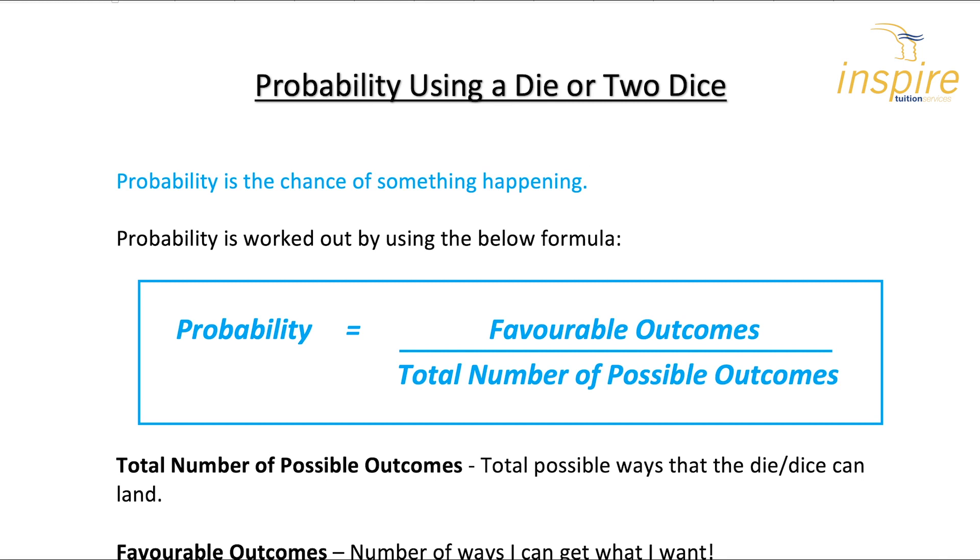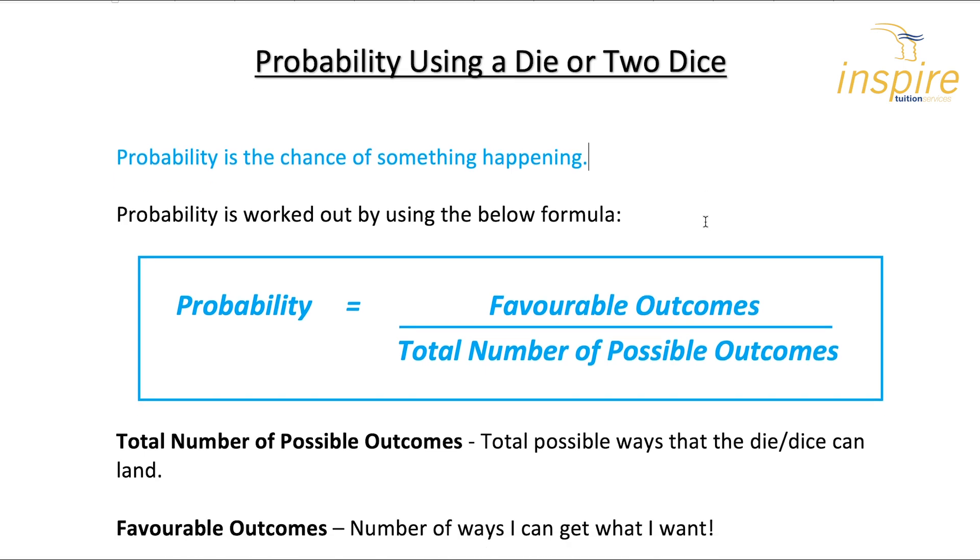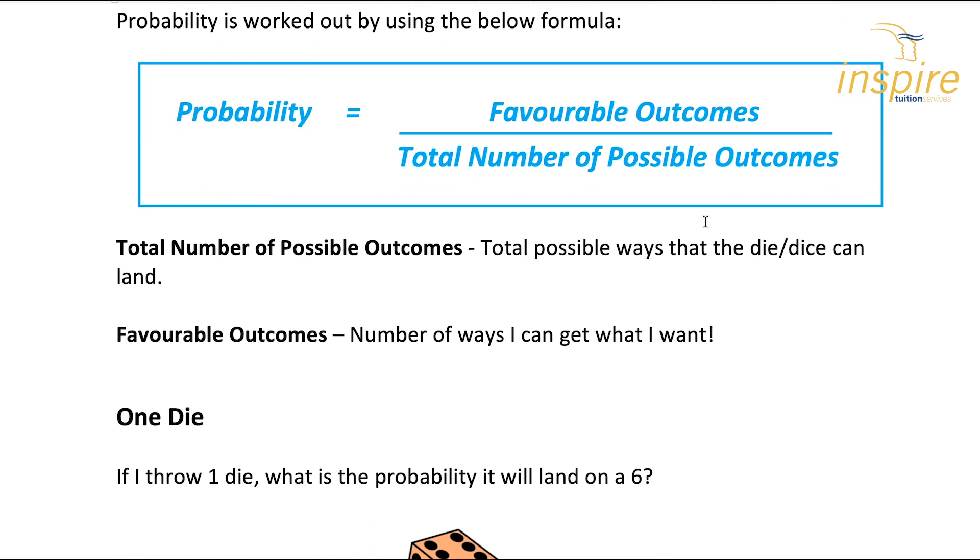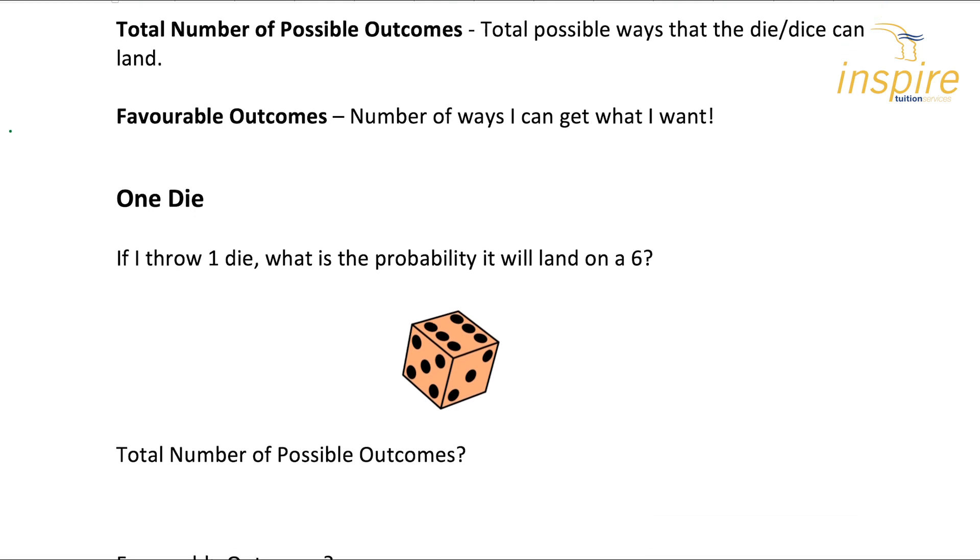So what does that actually mean? Well, the total number of outcomes - let me just get this back in order - the total number of possible outcomes is the total possible ways that the die or dice can land. And then the favourable outcomes is the number of ways I can get what I want. So keeping it pretty straightforward and easy for you.